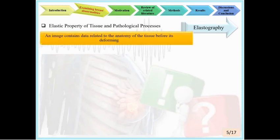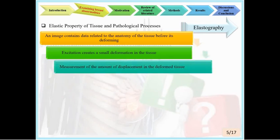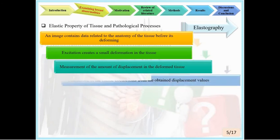Elastography includes the following steps: first, create an anatomical image of tissue before deformation. Then, a small deformation is created in the tissue using an external compressor. Another image is captured after deformation due to the applied force. The amount of displacement in the deformed tissue is estimated by comparing the two anatomical maps. Finally, the elastic coefficient is calculated from the displacement values to determine tissue elasticity.